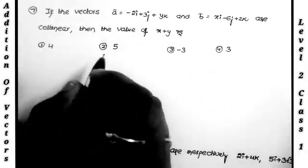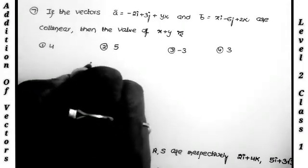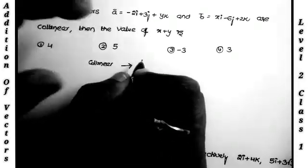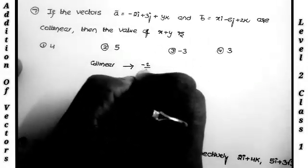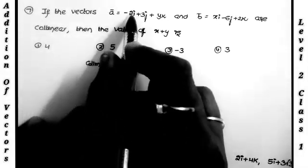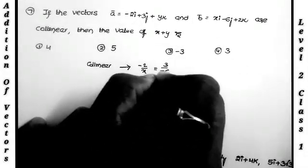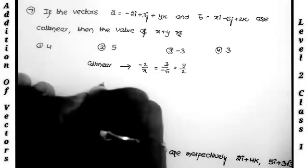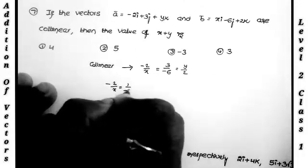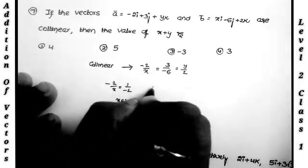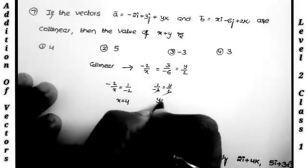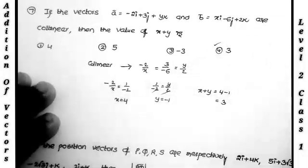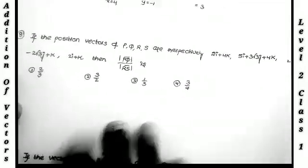Seventh question: if vectors a bar and b bar are collinear, find x+y. Condition for collinear vectors: a1/b1 = a2/b2 = a3/b3. So −2/x = 3/−6 = y/2. From −2/x = 1/−2, we get x = 4. From 1/−2 = y/2, we get y = −1. Therefore x+y = 4+(−1) = 3 — the last option.